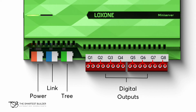The digital outputs can be used for turning lights on or off, opening or closing blinds, and turning on or off irrigation or air conditioning systems. Looking at the Luxon mini server, we can easily identify the eight digital output connectors by their red color. The digital outputs are numbered from Q1 on the left all the way to Q8 on the right.